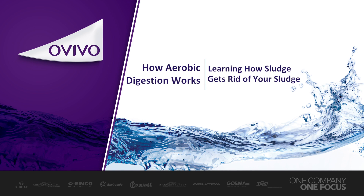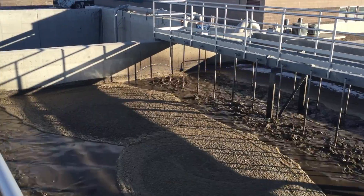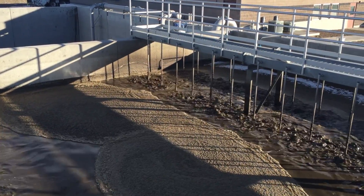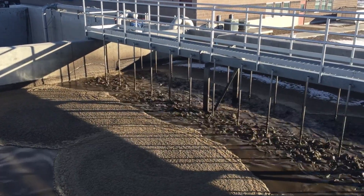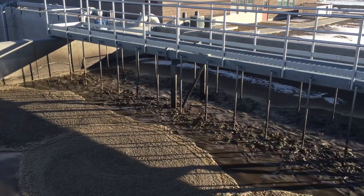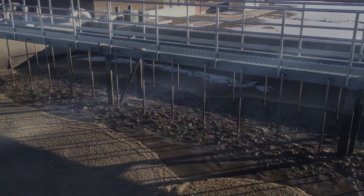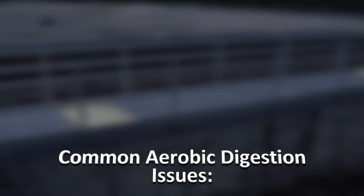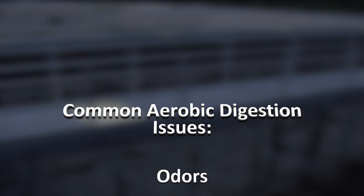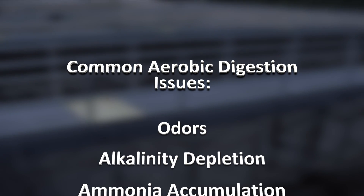This video will describe the biological processes associated with aerobic digestion and their corresponding chemical reactions. Since aerobic digestion utilizes microorganisms to degrade organics, it is very important to understand these biological processes and their associated chemical reactions.